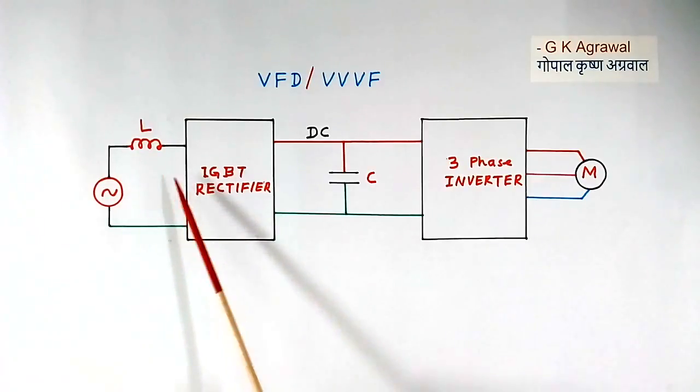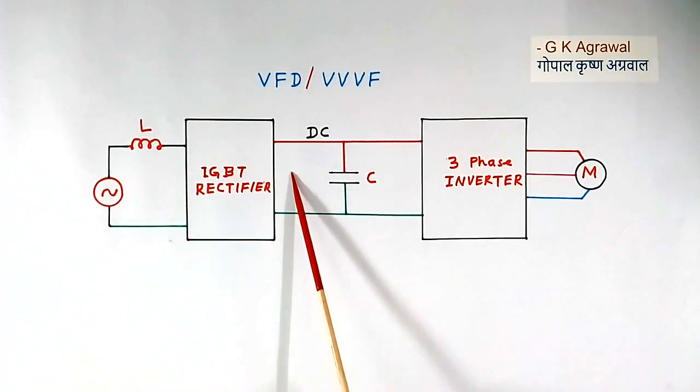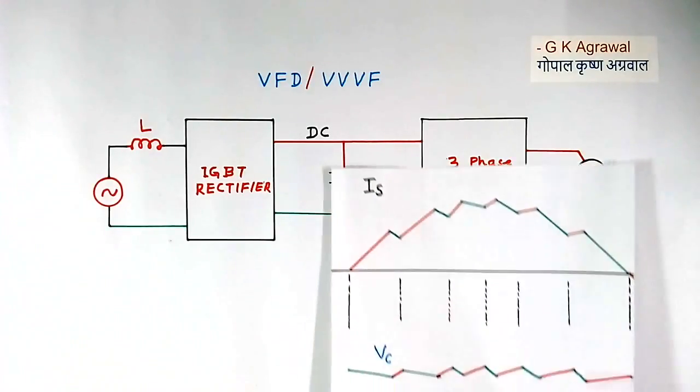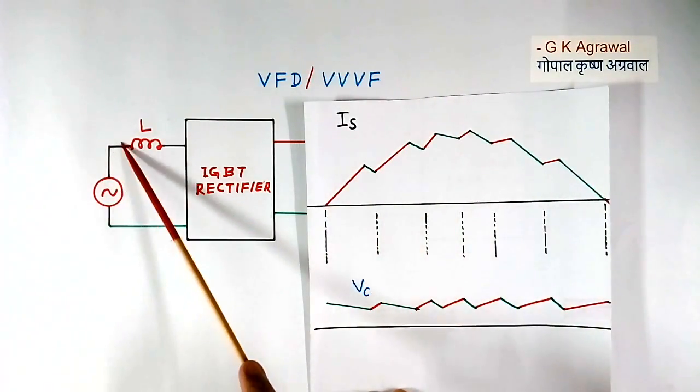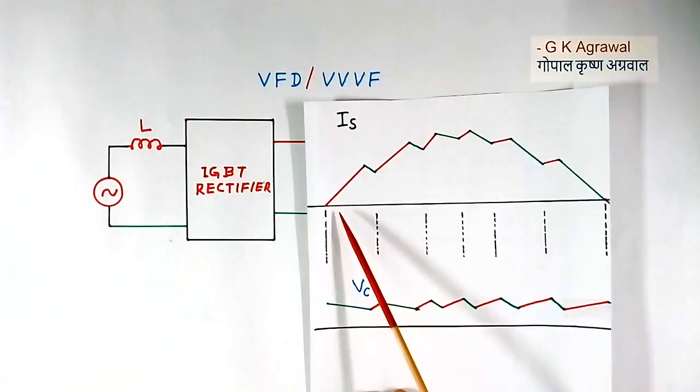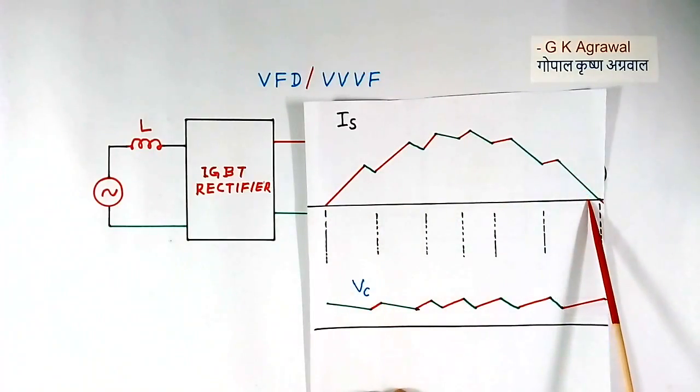Now this is converting AC into DC. The wave shape here, I will show you. This is half cycle current wave shape here. I have explained this in detail in some other video.